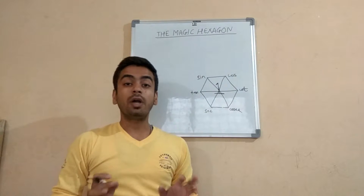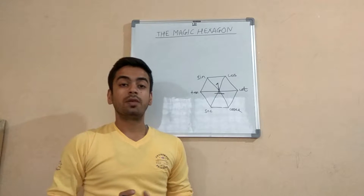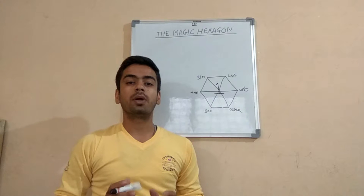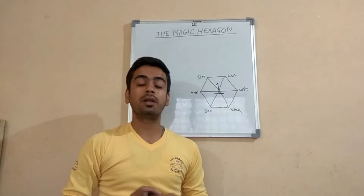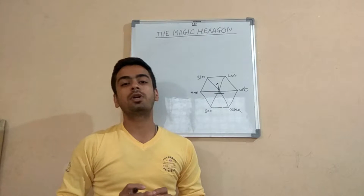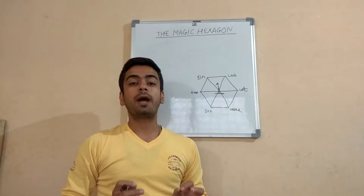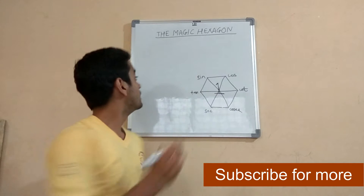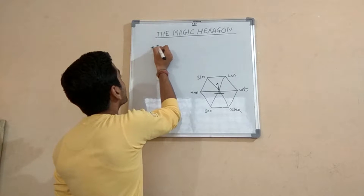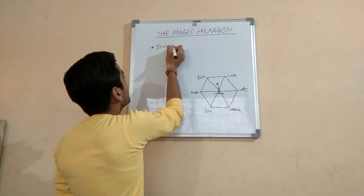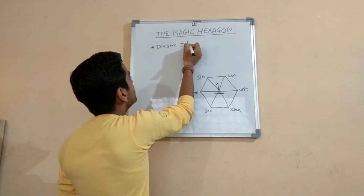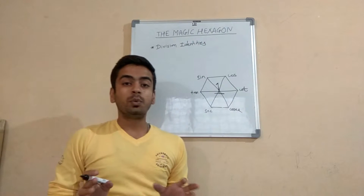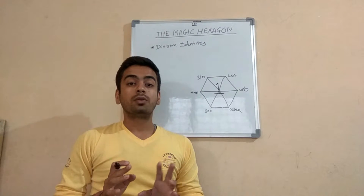We are going to look at five types of identities in this video. The first is the division identity, the second is the product identity, the third is the reciprocal identity, the fourth is the angle identity, and the last is the Pythagorean identity. Let's get started with the division identities.